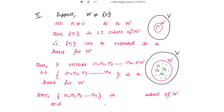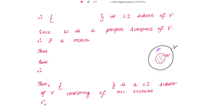Now since {v1, v2, ..., vn} is a linearly independent subset of W, and W is a subset of V, this set is also a linearly independent subset of V.